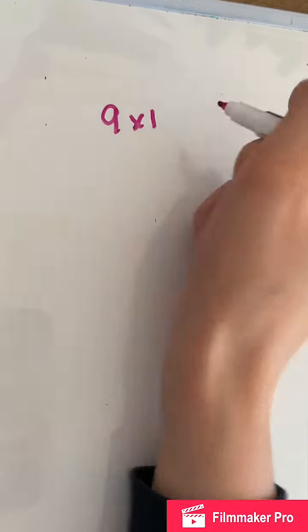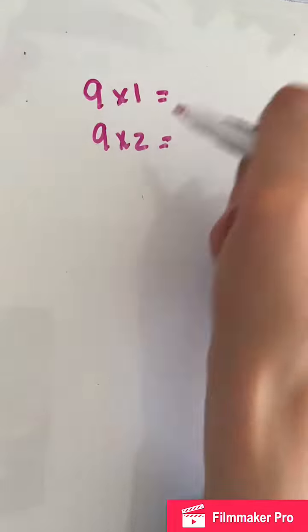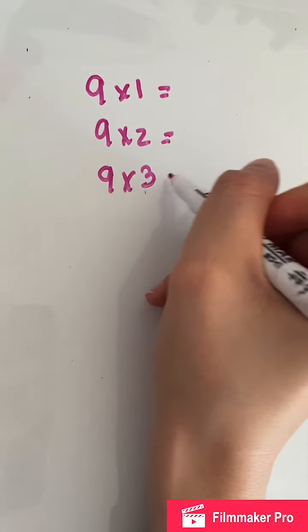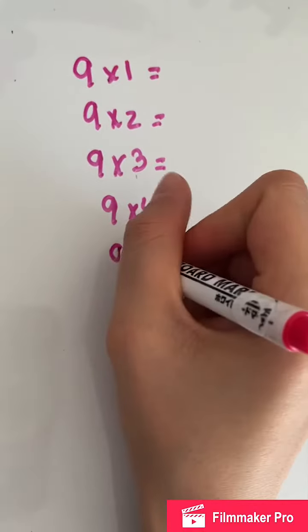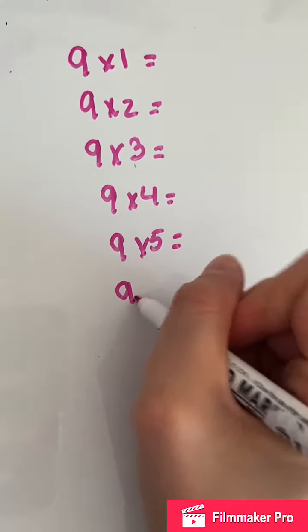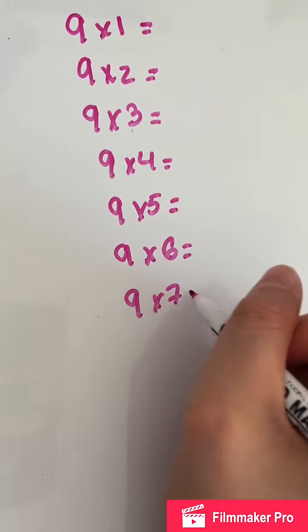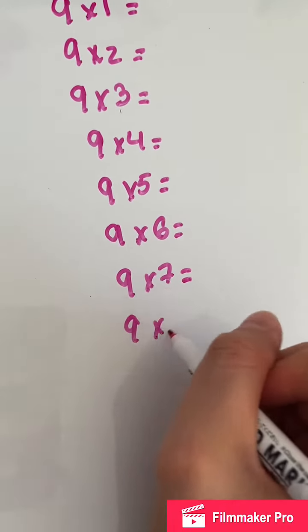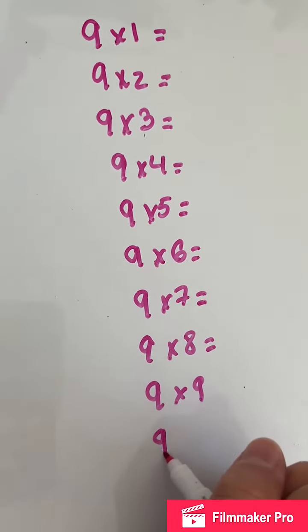So nine times one, nine times two, nine times three, nine times four, nine times five, nine times six, nine times seven, nine times eight, nine times nine, then nine times ten.